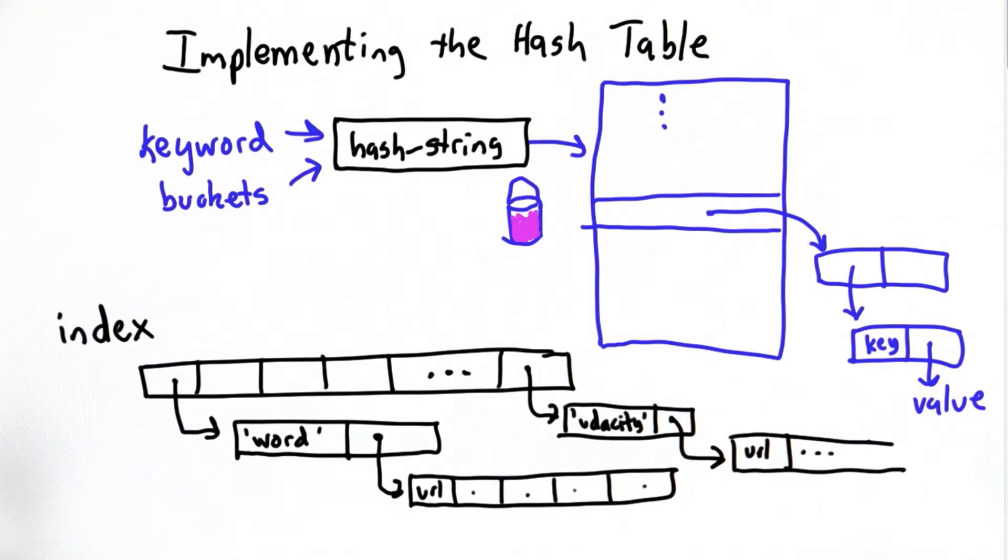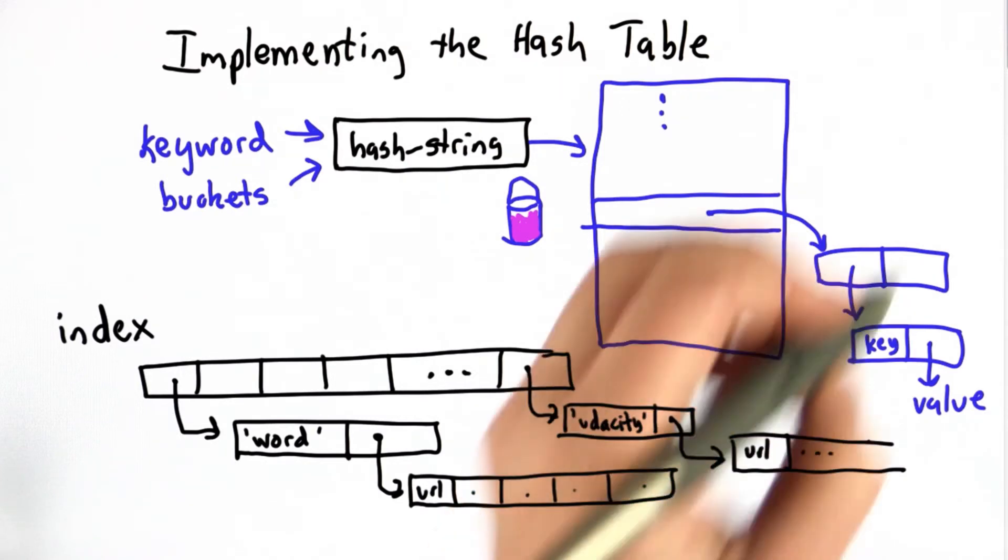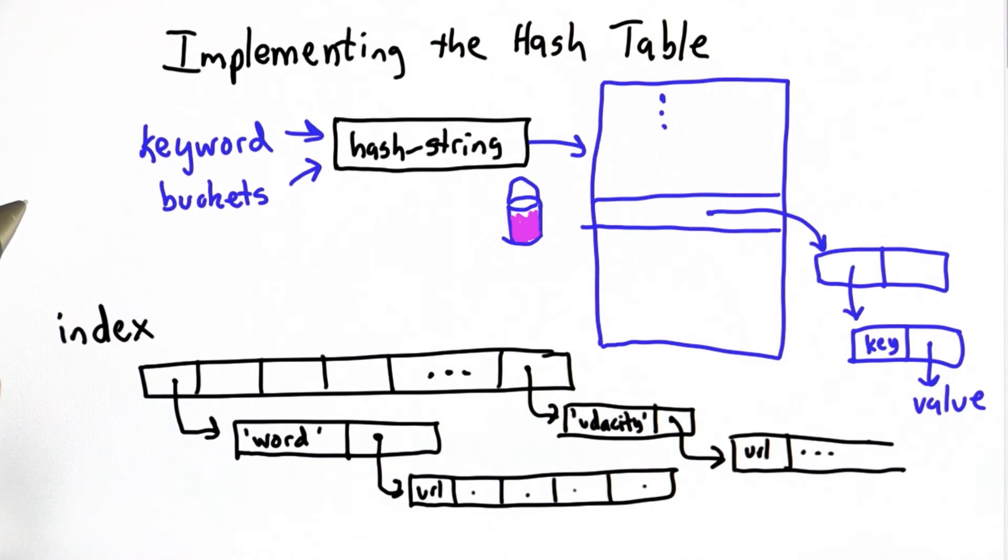Now we want to change things to implement a hash table. I want you to think about what data structure we'll use, and we'll make that a quiz to decide a good data structure to implement the hash table.